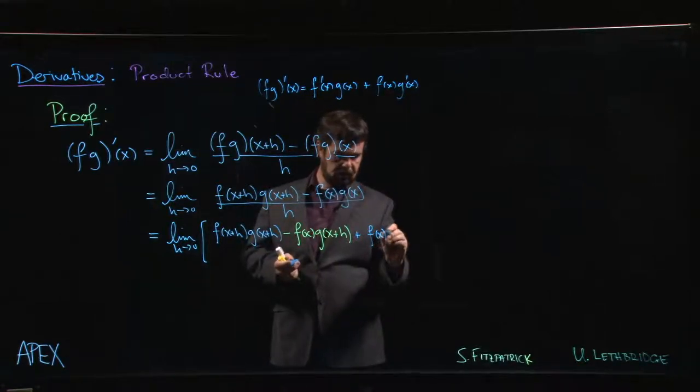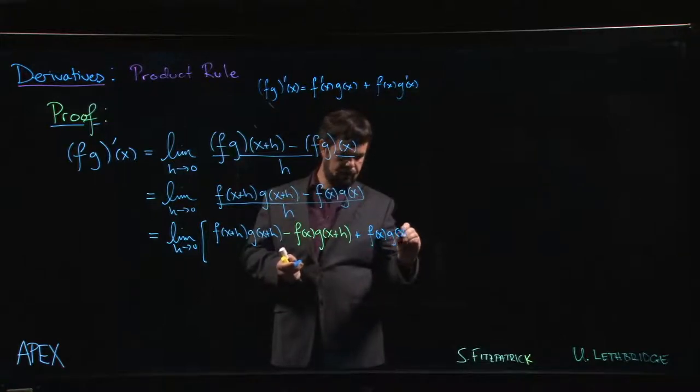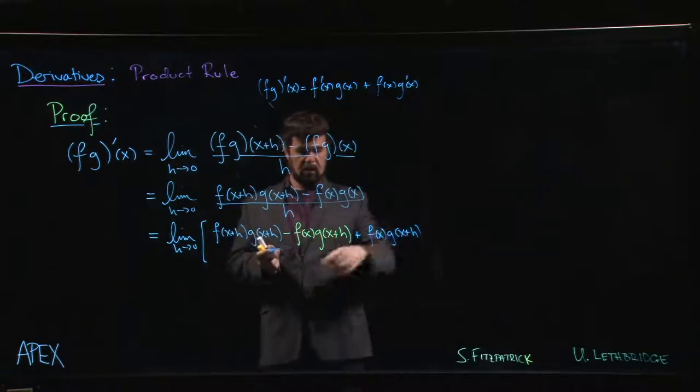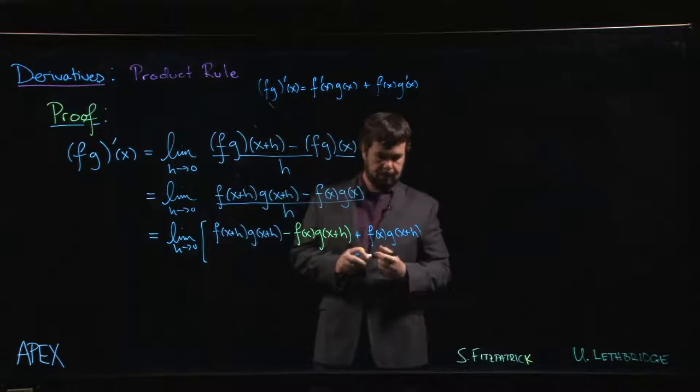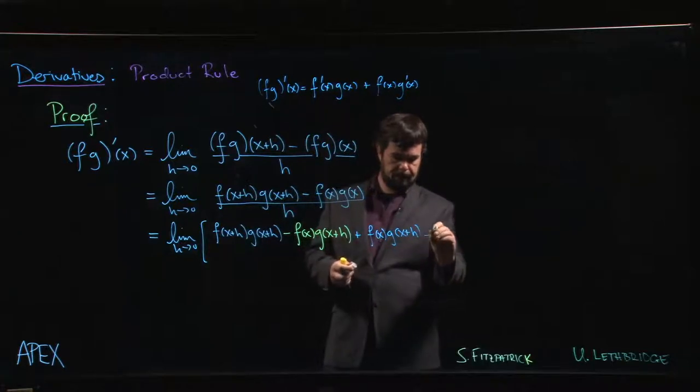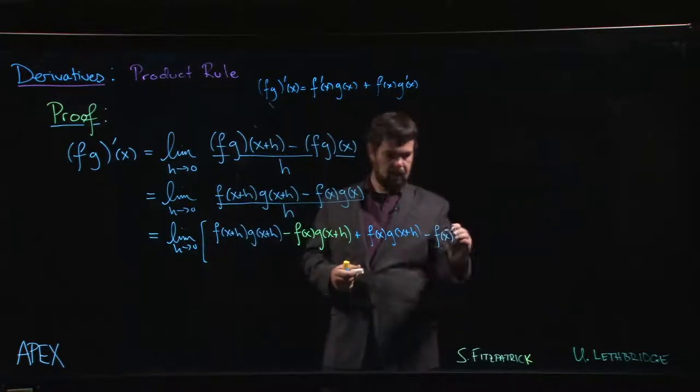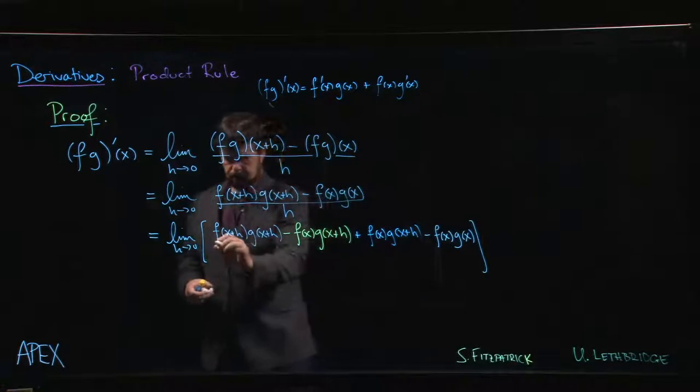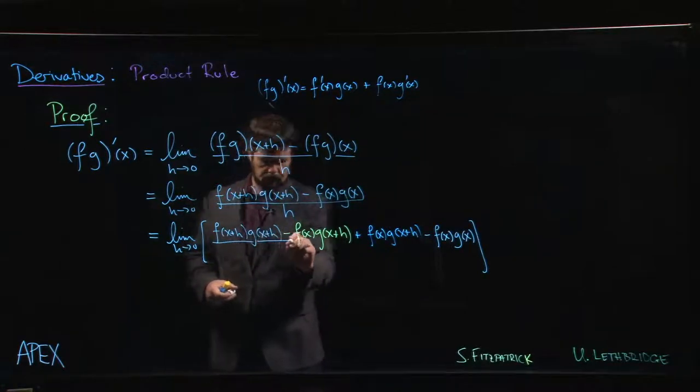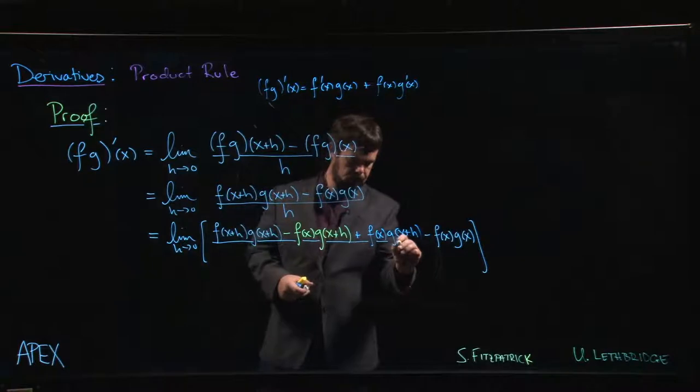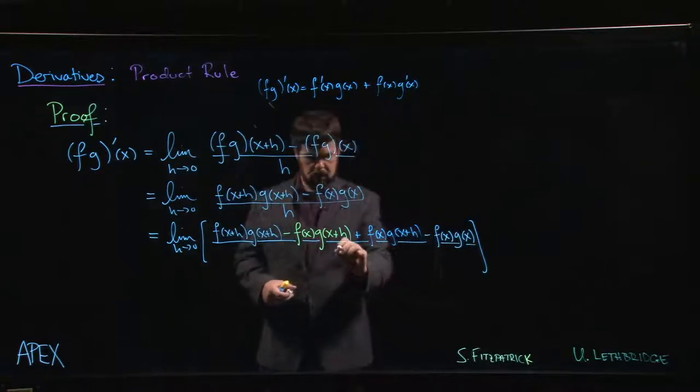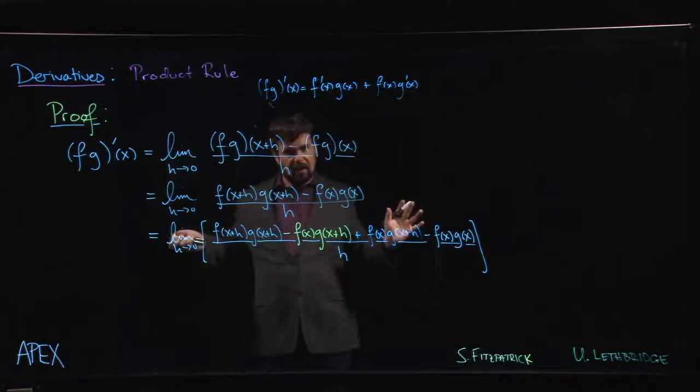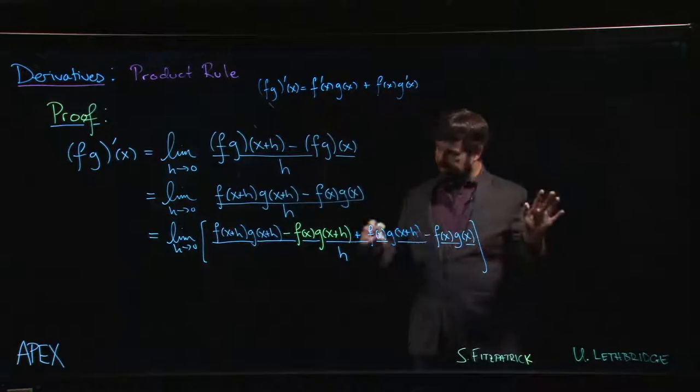So if you add something, or in this case subtract something, you should put it back. So we subtract this term then we add it back again, so we haven't changed anything. And then we have our f of x g of x at the end, and this whole thing is divided by h.